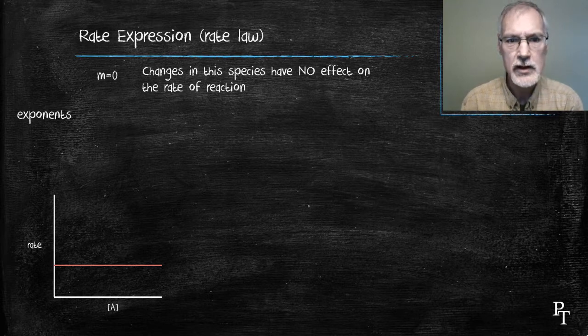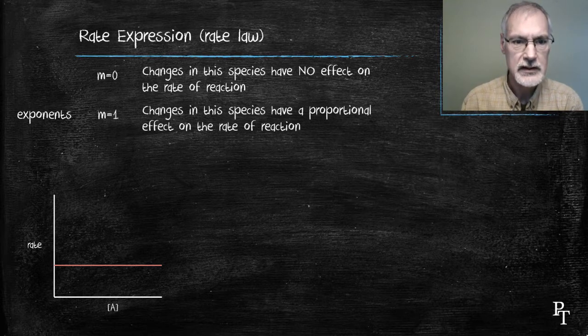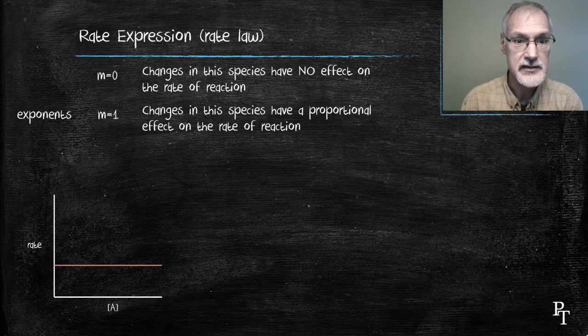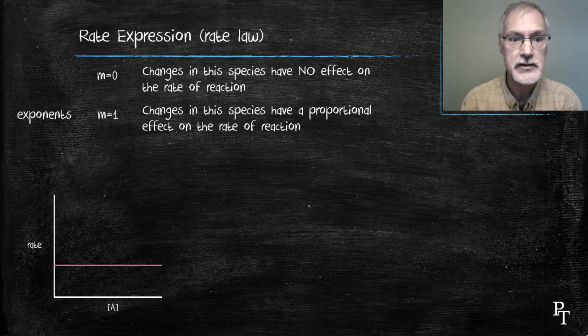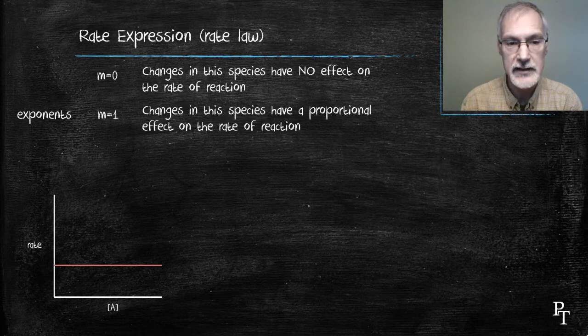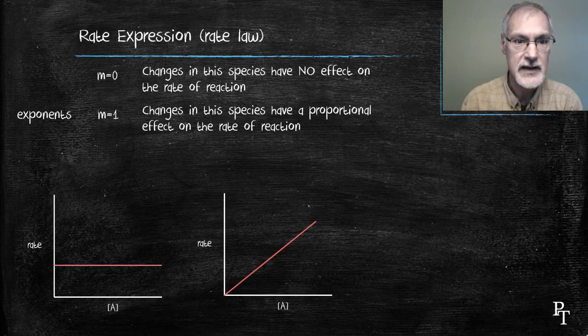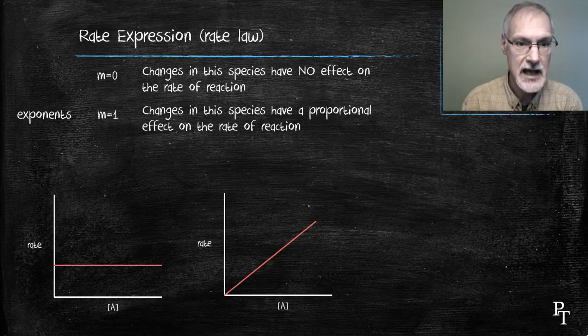If the exponent is 1, we have what's called a proportional change. In that situation, changing the concentration of A results in a proportional change in the rate of reaction. Doubling A doubles the rate. Tripling A triples the rate. Cutting the concentration of A in half cuts the rate in half.